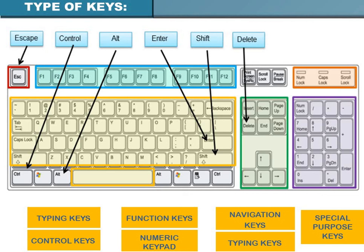The fifth type is navigation keys — the arrow keys for upward, downward, left, and right movement. These are also called cursor movement keys. They allow you to navigate data and move your cursor in different directions on the screen.